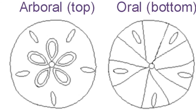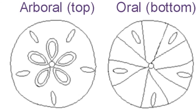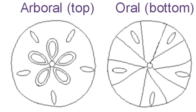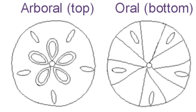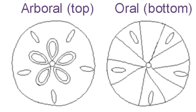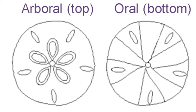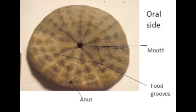The sand dollar's body has two distinct sides, but both are covered with tiny appendages. On the bottom side is the mouth, anus, food grooves, and holes for the tube feet arranged in five rows radiating outwards from the mouth.